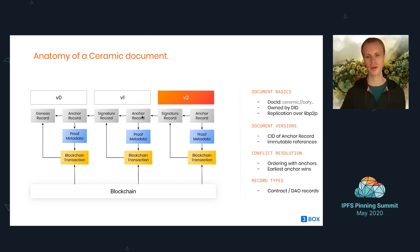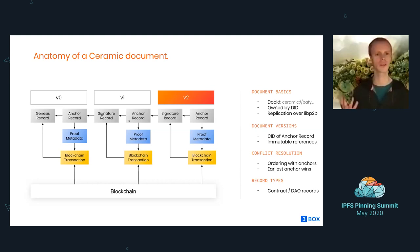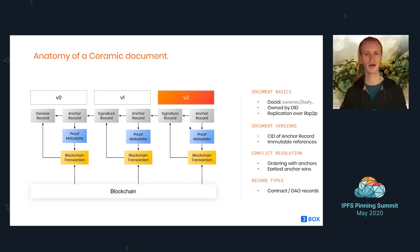There's another record type beyond signatures and anchors. We might want documents controlled by a DAO, contract, or something similar. So we want to create a record type like a DAO vote outcome, which makes the system more flexible. I'll show a quick use case of that in a bit.